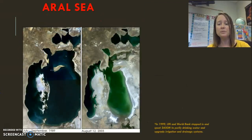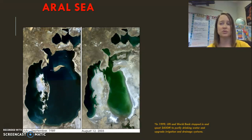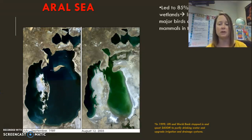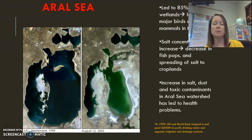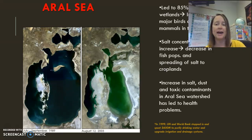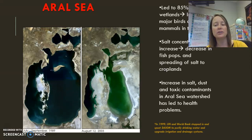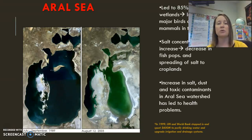The diversion has caused huge problems in the ecology of the area and also caused health problems due to the toxins surrounding the lake. Aerial views from 1989 and 2003 show salts surrounding the water, similar to Mono Lake. We lost 85% of the wetlands surrounding the Aral Sea, which really affects bird populations. Increased salt concentration decreased fish populations and toxic contaminants caused human health problems. In 1999, the United Nations and the World Bank stepped in, spending about $600 million on water purification and upgrading irrigation systems.